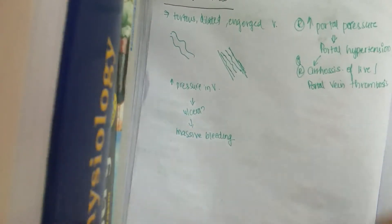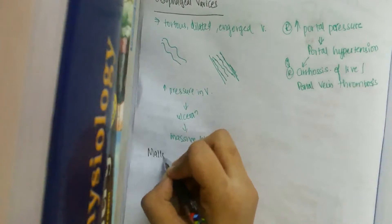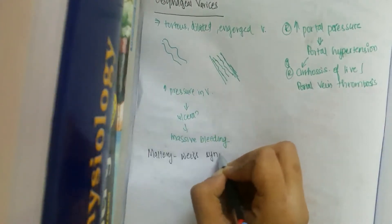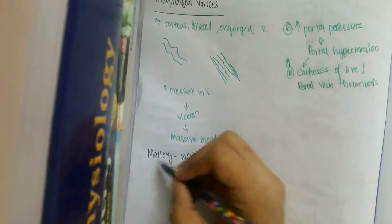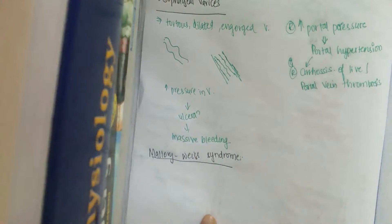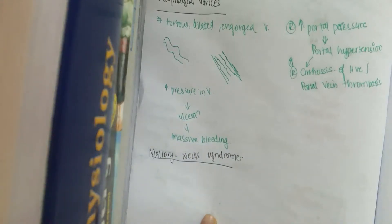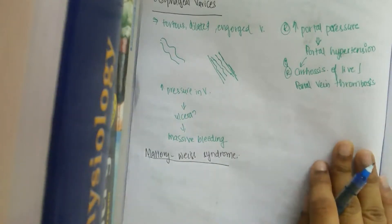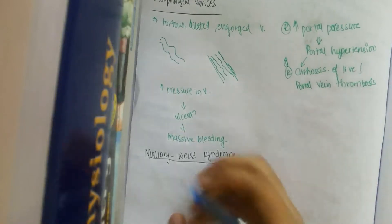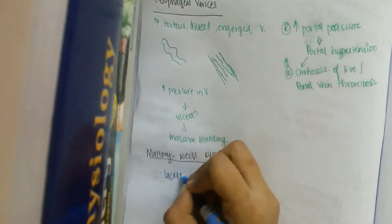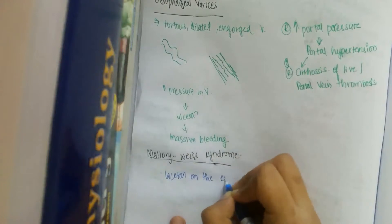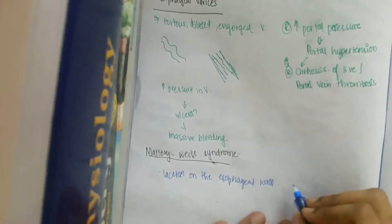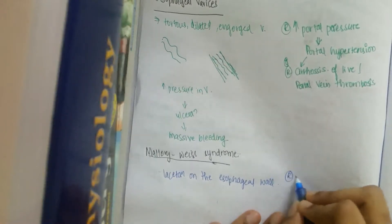The second syndrome to discuss is Mallory-Weiss syndrome. In Mallory-Weiss syndrome, lacerations are seen across the mucosa of the gastroesophageal junction. These lacerations are seen on the gastroesophageal wall.